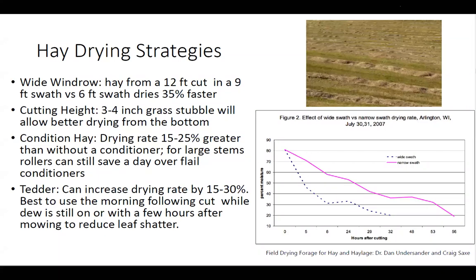For hay drying strategies: getting a wide windrow makes a big difference. With a 12-foot cutter, a 9-foot swath versus a 6-foot swath dries 35 percent faster. Spreading hay out as wide as you can takes advantage of more solar energy — watts per square meter — for the drying effect. More spread out means more aeration and a much better dry-down.